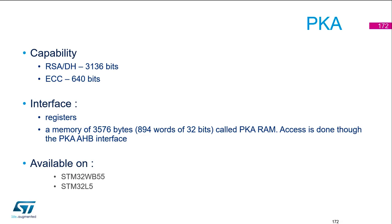The interface of this IP is classical with registers, but also includes a memory of 3576 bytes called PKRAM. It will be accessed via the AHB interface, and it is where you put your arguments and get the results.